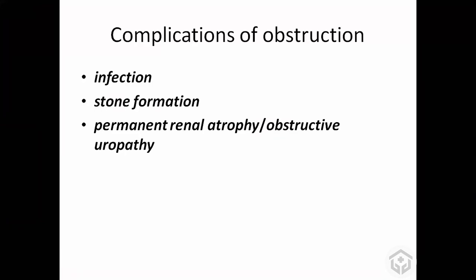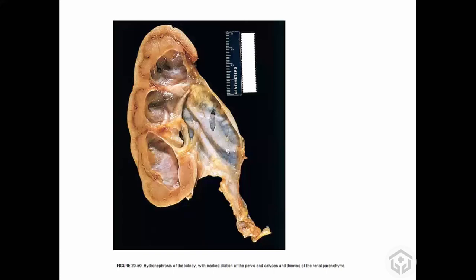So the three problems of obstruction are: infection, stone formation, and obstructive uropathy. In this microscopy specimen, you can see the pelvis is dilated like a thin tissue paper. The calyceal system is also dilated, and this is known as hydronephrosis.